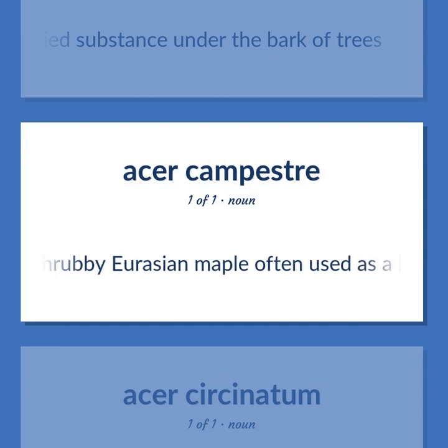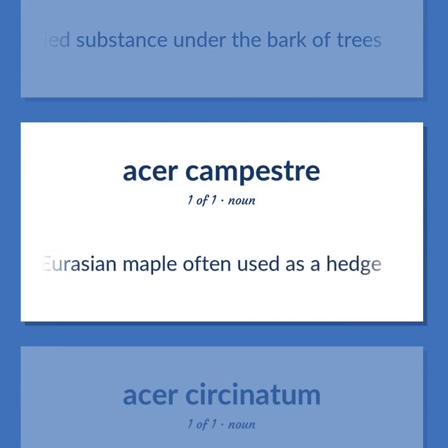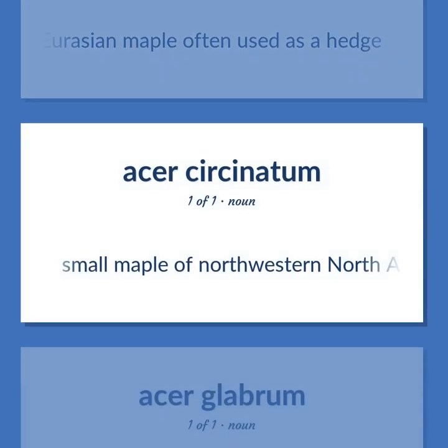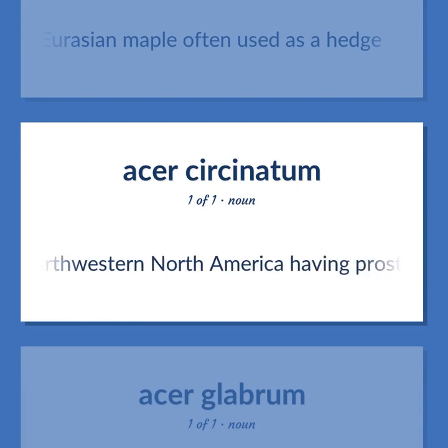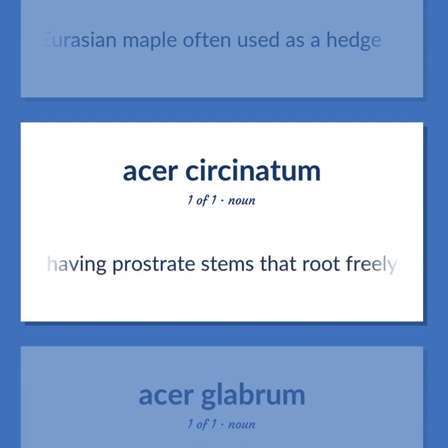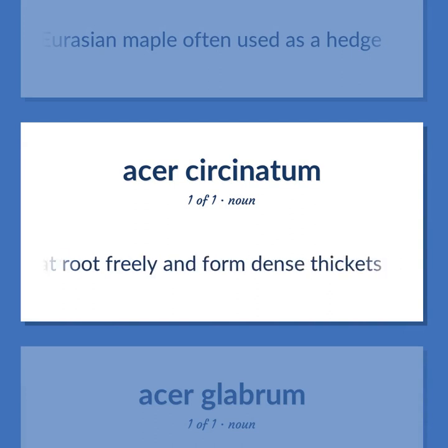Shrubby Eurasian maple often used as a hedge. Small maple of northwestern North America having prostrate stems that root freely and form dense thickets.